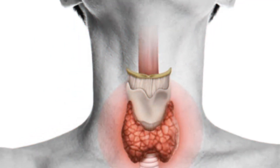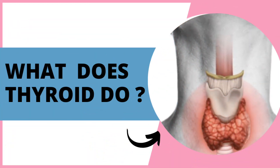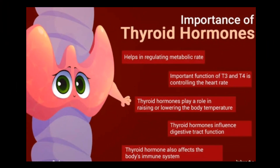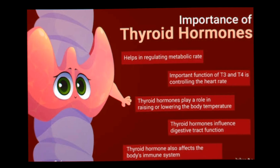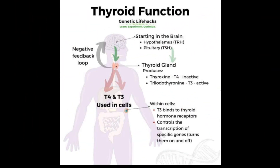You have glands throughout your body that create and release substances to help your body do specific things. Your thyroid has an important job: releasing and controlling thyroid hormones that control metabolism. Metabolism is a process where the food you take into your body is transformed into energy, used throughout your body to keep many systems working correctly.